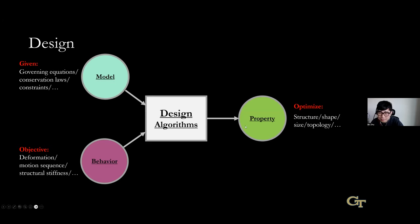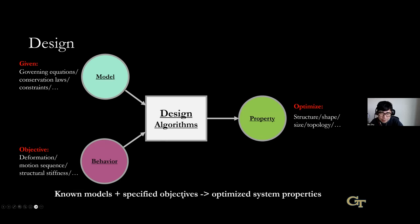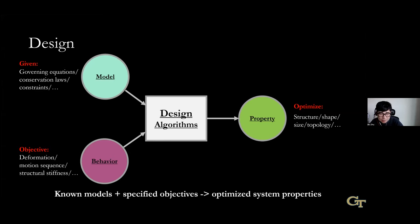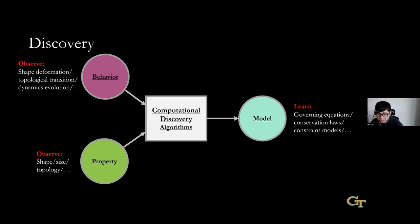For the design problem, it's about switching two of these components. Given a known governing equation — say we're designing a soft body system — and given some target behavior, like a specific objective in our design problem, we want to figure out the system's property: the structure, shape, size, topology. We use inverse differentiable simulation to get this structure based on our model and behavior.